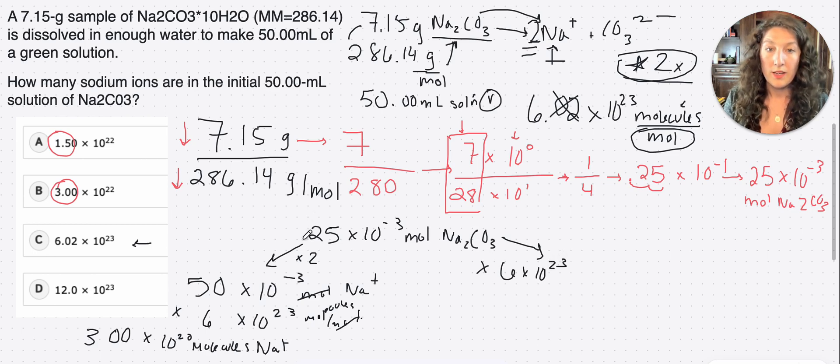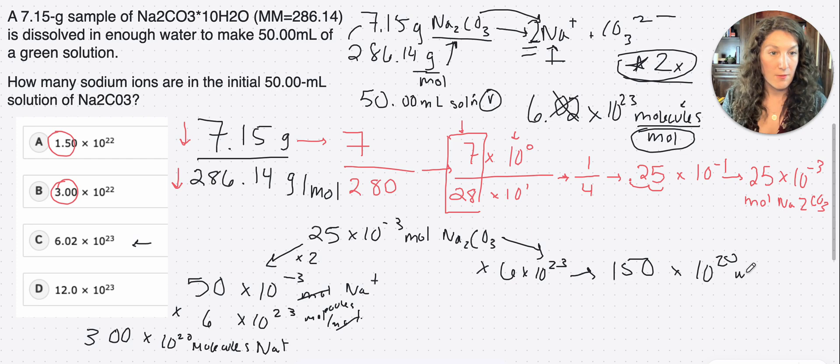Equally valid options. So what we're doing here is just multiplying by 6 times 10 to the 23, right? So 25 times 6, 150. The way I did that is 25 times 4 is 100. 25 times 2 is 50, so that gives us 150. And again, the exponent rules are the same. We just add the exponents. So negative 3 plus 23, again gives us 10 to the 20. And then this is again now molecules of Na2CO3.